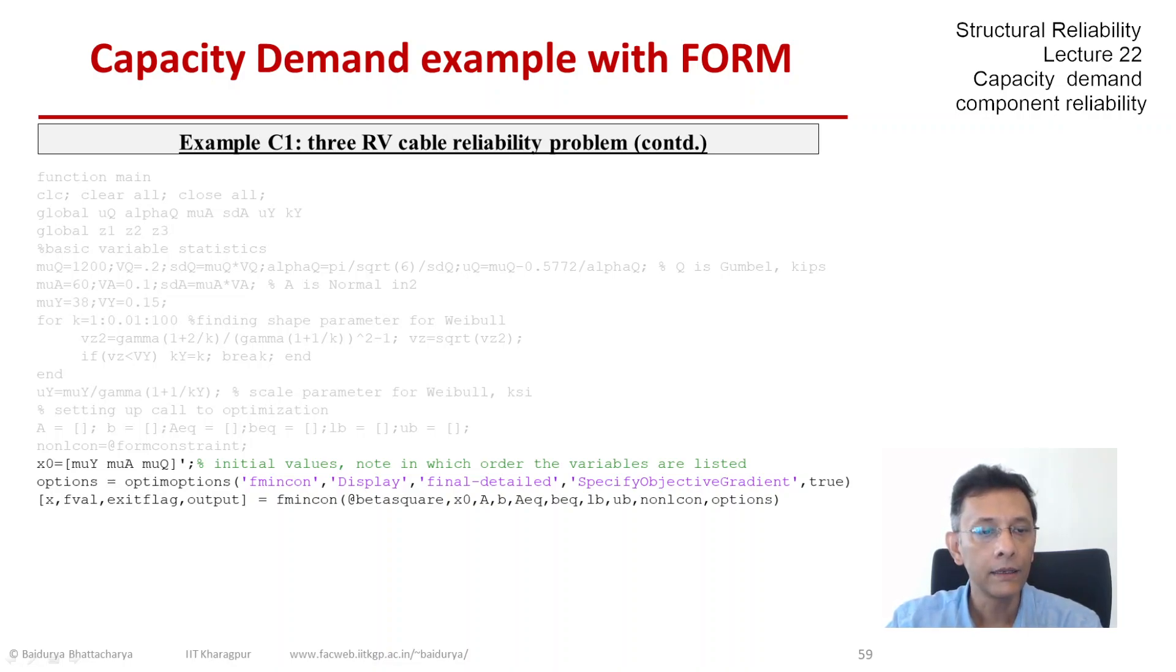And then I call the function fmincon, and that non-linear constraint has been provided. The objective function is beta squared. That is something we are going to show in the next slide.